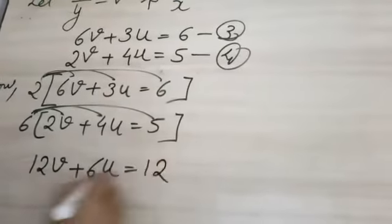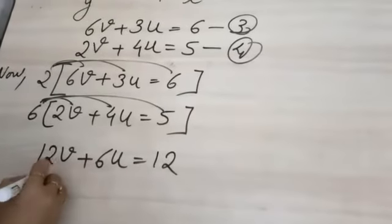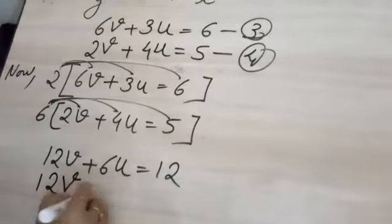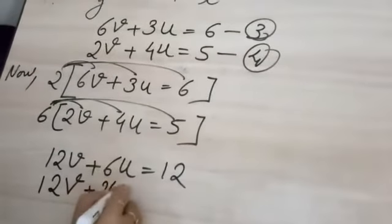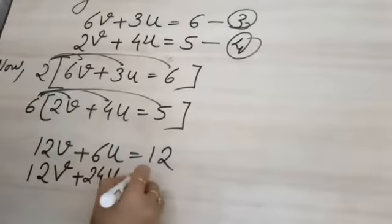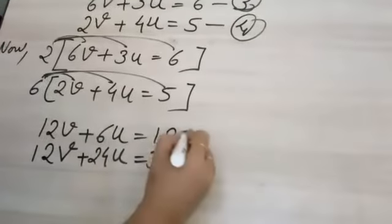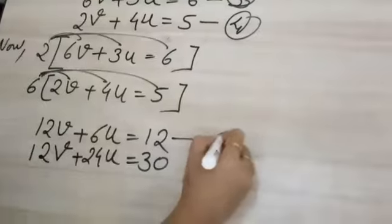What it will become: 6 times 2 is 12v plus 2 times 3 is 6u is equal to 6 times 2 is 12. And here again 6 times 2 is 12v plus 24u is equal to 30. This will be equation 5 and equation 6.